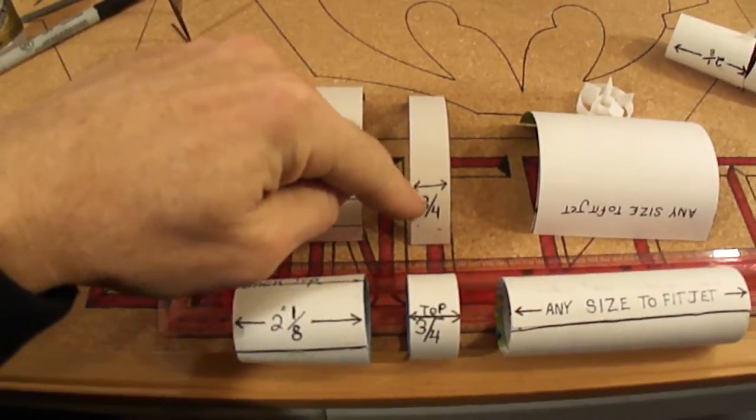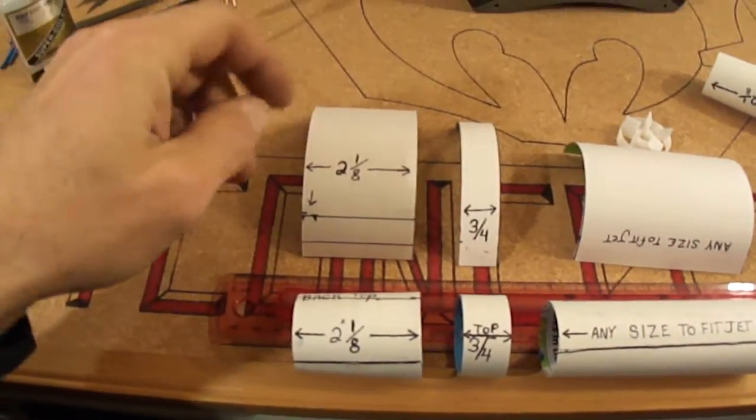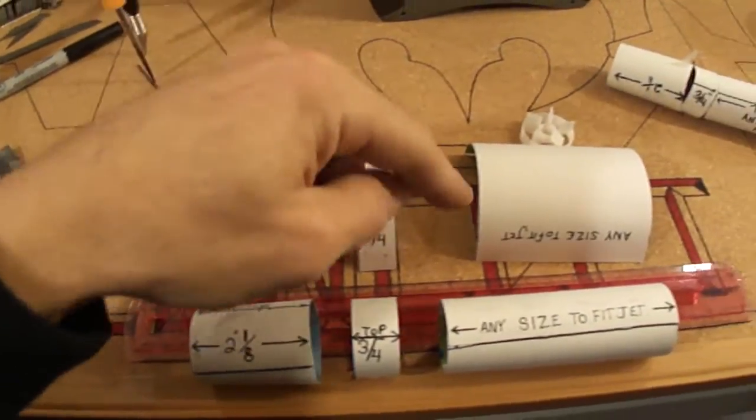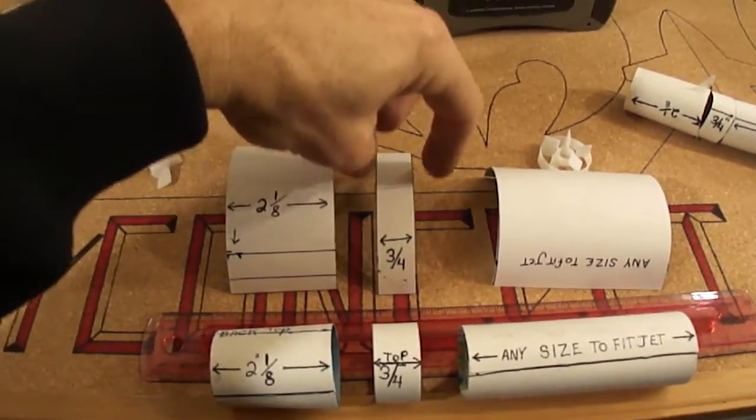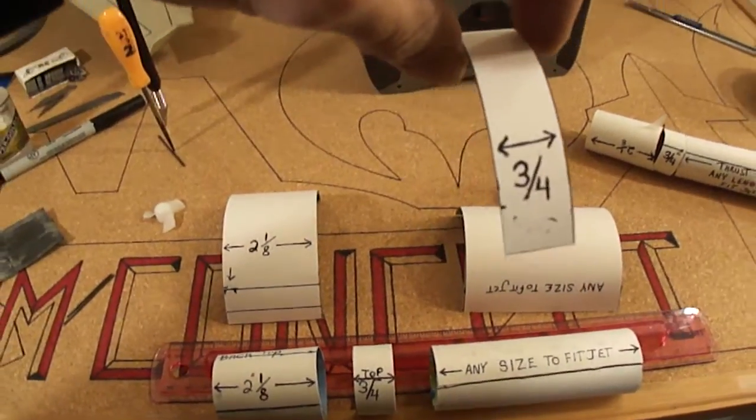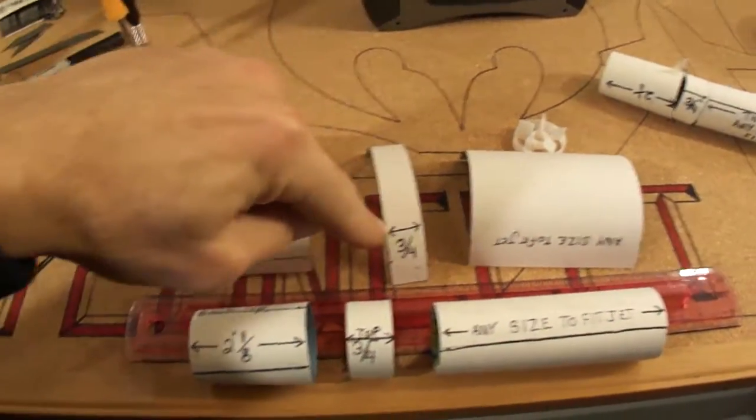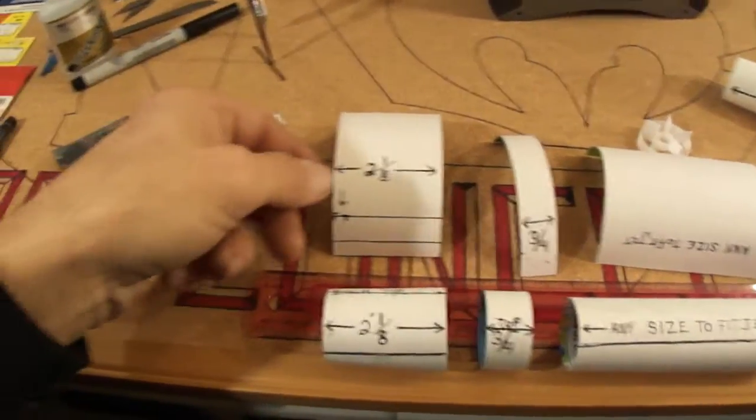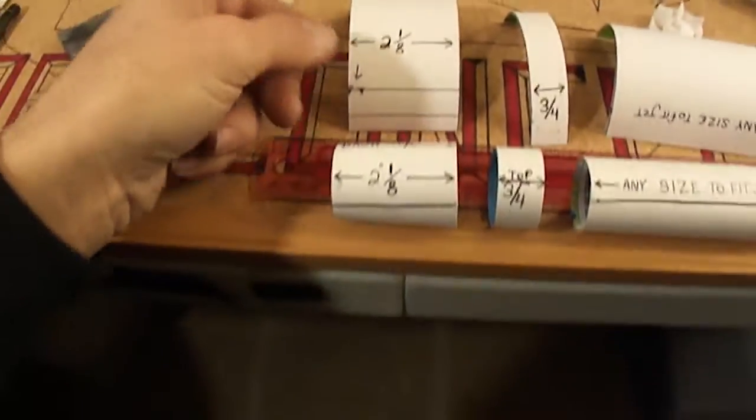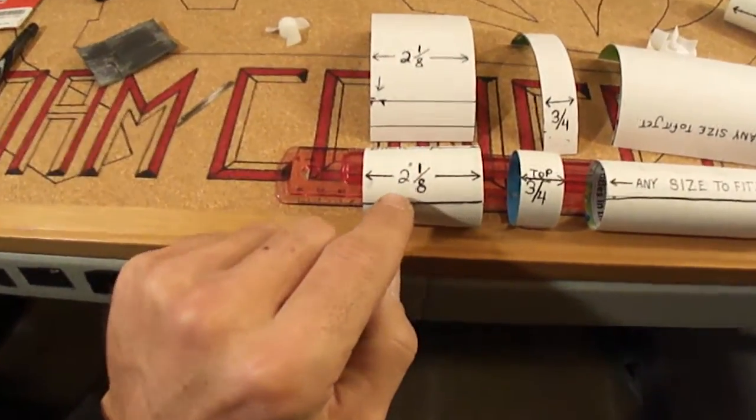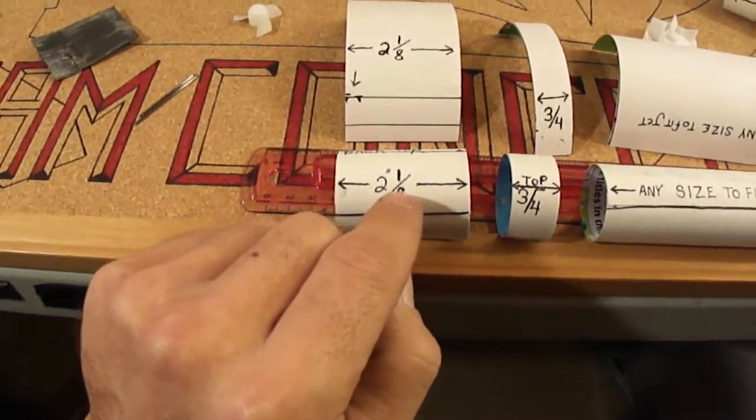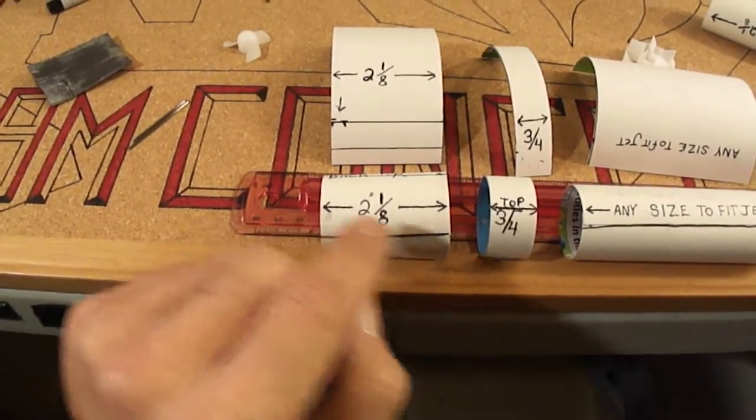Now for the connector piece that connects your thrust vector nozzle onto your thrust tube. It's three quarters of an inch from back to front. Then the thrust vector nozzle itself, which we got here, is two and an eighth inches from back to front.